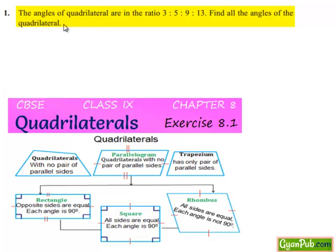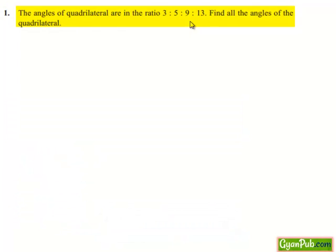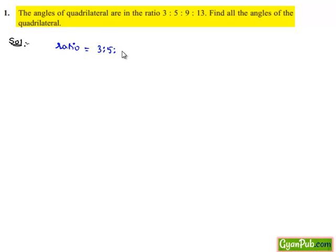Moving on to the first question: the angles of a quadrilateral are in the ratio 3 is to 5 is to 9 is to 13. Find the angles of the quadrilateral. Now moving on to the solution. We have been given the ratio of 4 angles of a quadrilateral, that is 3 is to 5 is to 9 is to 13.